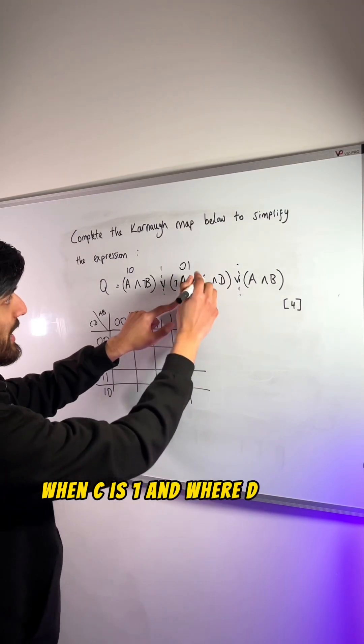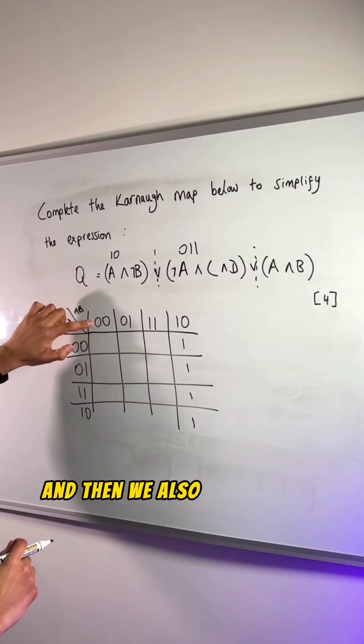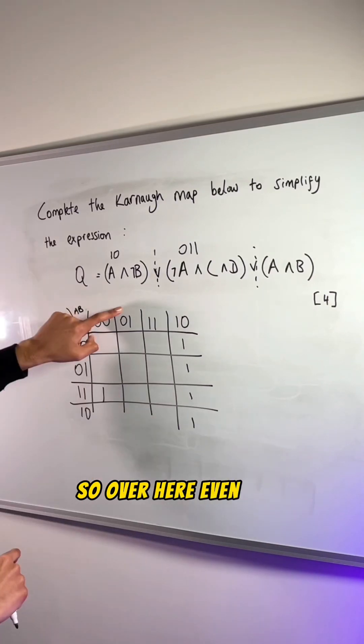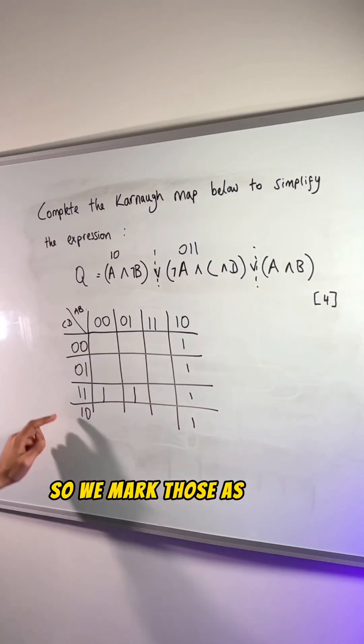And then we look at this expression when A is 0, when C is 1 and where D is 1 over here. And then we also have to find where 1, 1 is, so over here. Even this satisfies that, so we mark those as 1 as well.